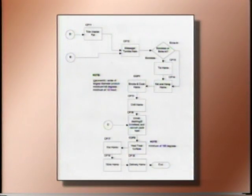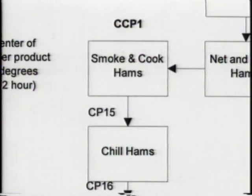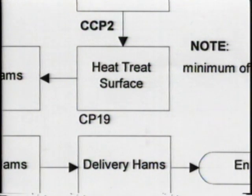Through hazard analysis, Shad Meats Incorporated has identified several processing steps as CCPs in their HACCP plan, such as CCP-1, cooking and smoking, and CCP-2, Listeria monocytogenes control. Shad Meats has additional CCPs in their plan which are not demonstrated in this video. Please pause the tape now to find figures 2 and 3 in the accompanying manual.